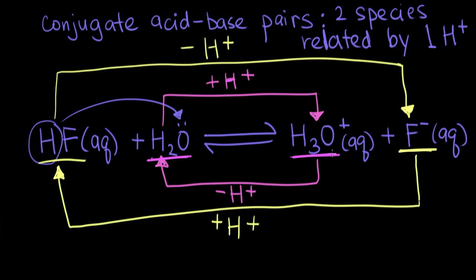Whenever you have a conjugate acid-base pair, one thing in the pair will be an acid and the other will always be a base. The Brønsted-Lowry definition says anything that can donate an H⁺ is an acid, so our hydrofluoric acid is acting as the acid. That means fluoride has to be acting as a base — and that makes sense because the Brønsted-Lowry definition of a base is something that will accept an H⁺, which is exactly what F⁻ does in the reverse reaction.